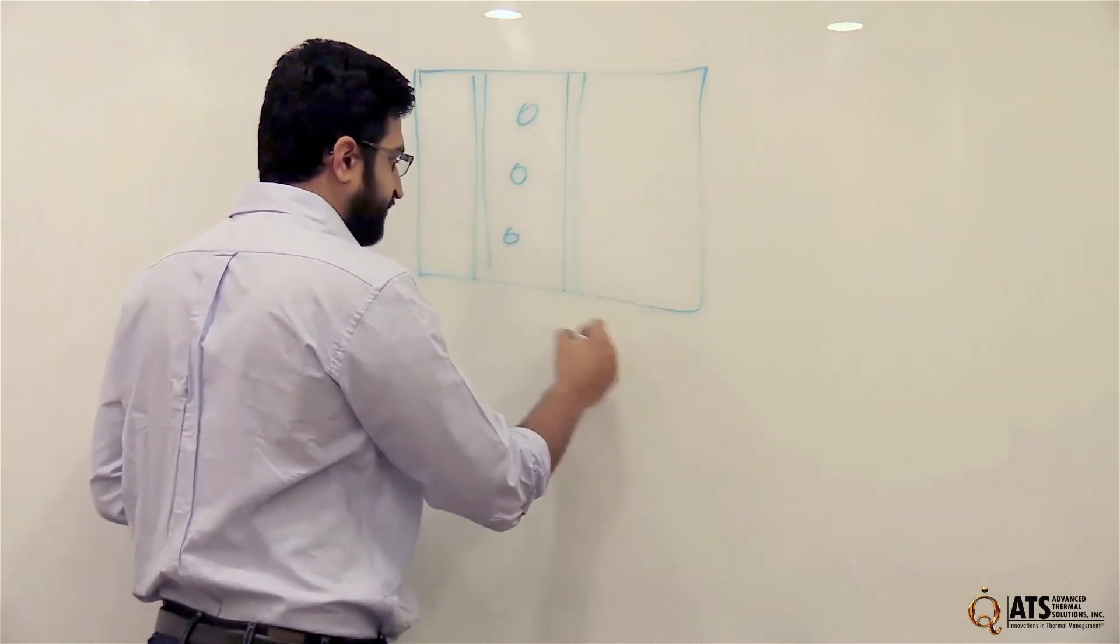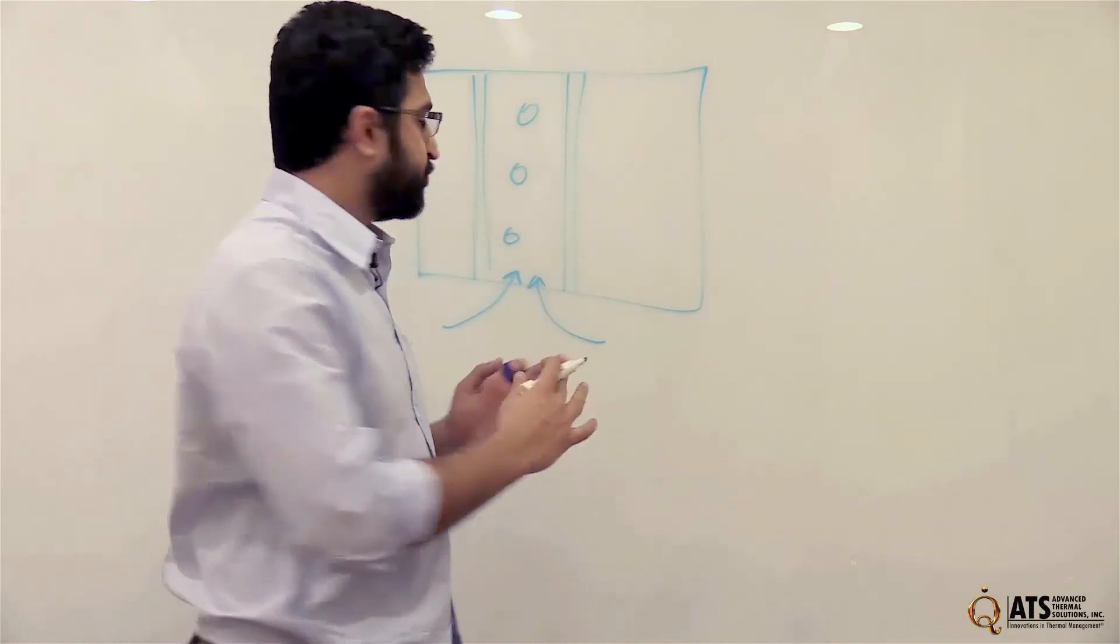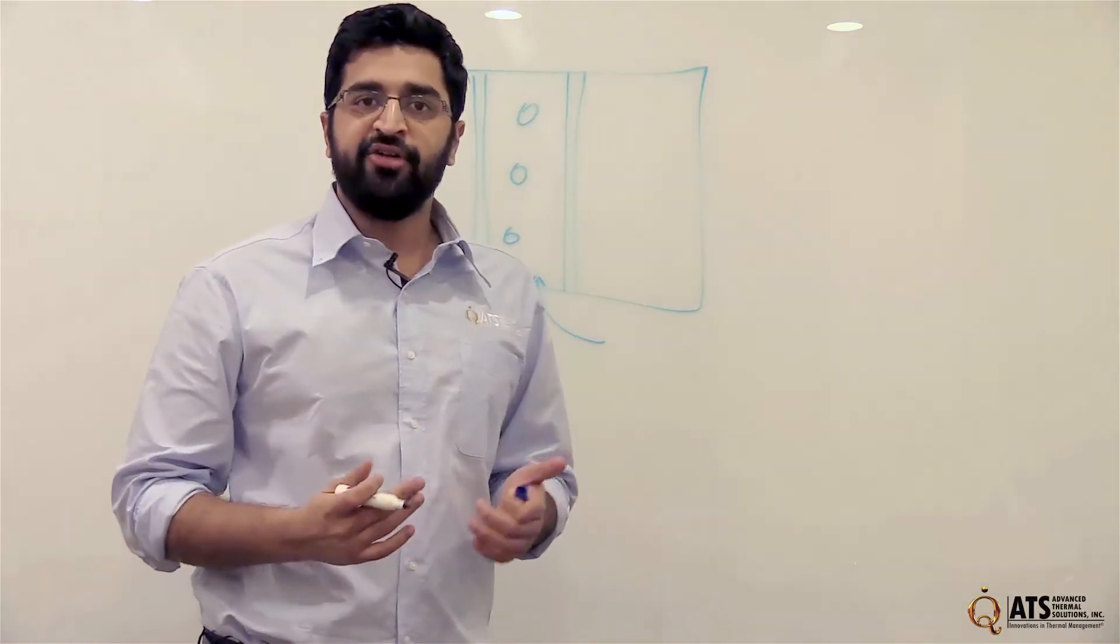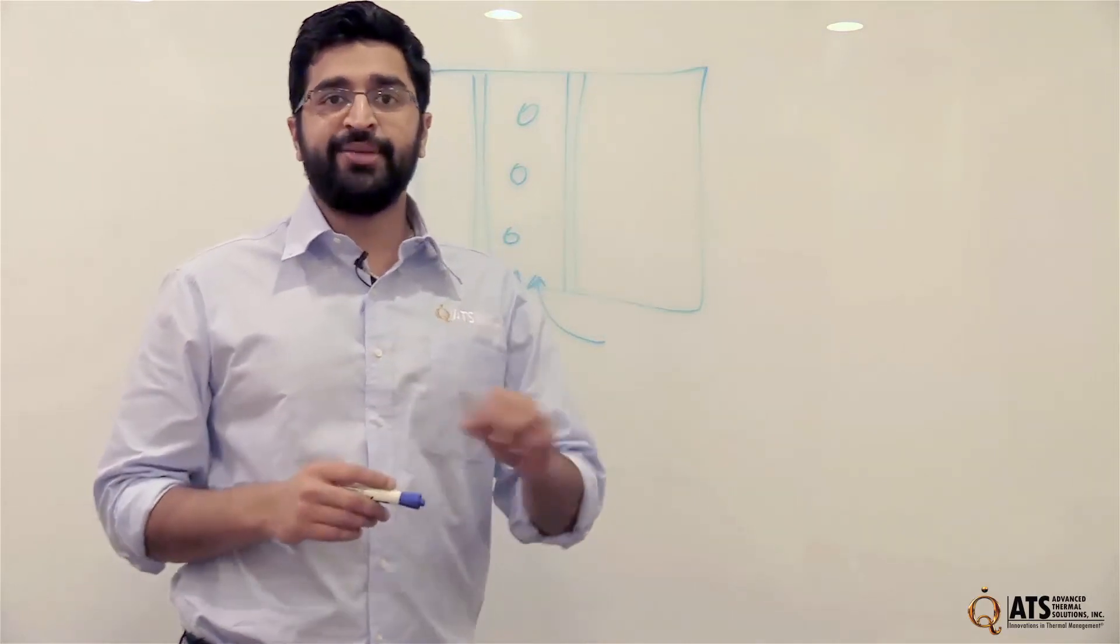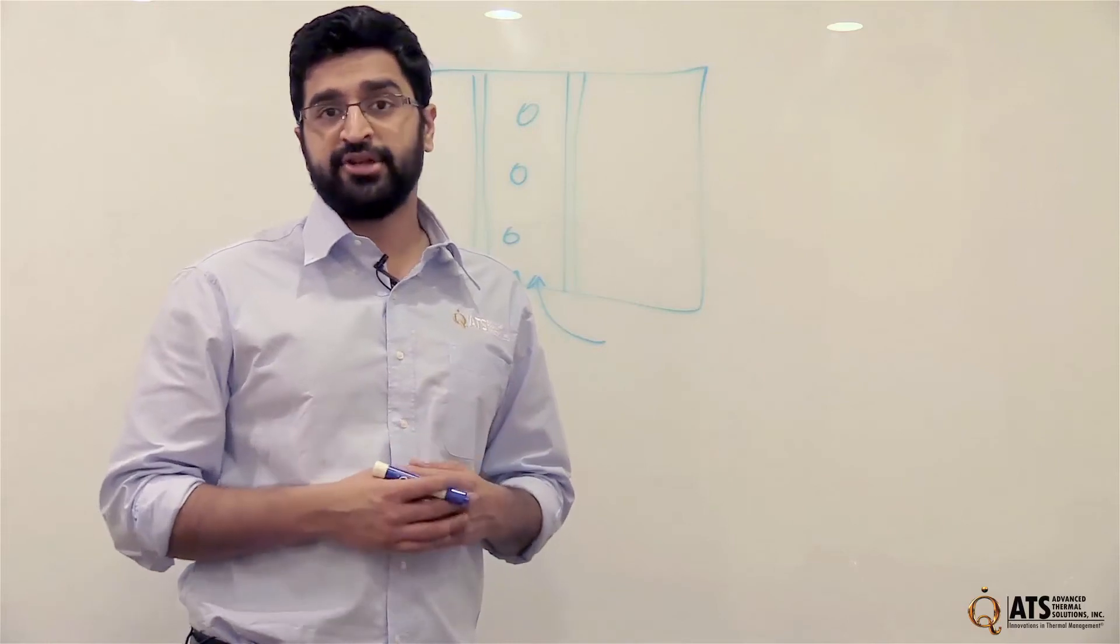So you're still going to have the chimney effect for the air coming in between the fins, but in the middle here you'll take advantage of the increased surface area from the pins. And that turns out, optimizing a shape like that turns out to be the best method of cooling through natural convection.